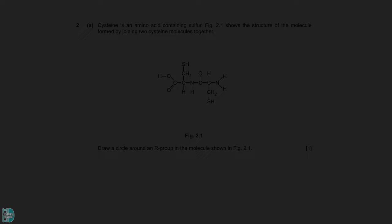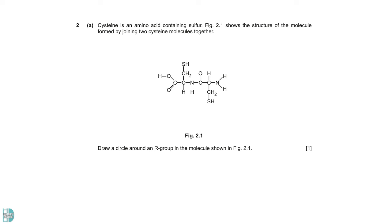In question 2, we have a diagram of a dipeptide. A wants you to draw a circle around an R group. The C-O-N-H in the center is the peptide bond. Right next to the bond are the amino acid's central carbons. You have the amine and carboxyl group at the two ends. The central carbons are connected to a hydrogen and an R group. You can circle either one of them to get the mark.